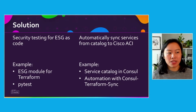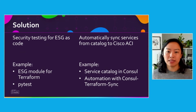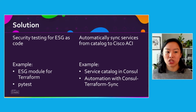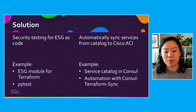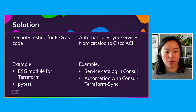The solution I'll walk through today is how you do security testing for an endpoint security group as code, as well as how you automatically sync those services from a catalog to Cisco ACI. Effectively, the end-to-end solution should be a secure infrastructure as code that automates a lot of this workflow for you, so you don't have to worry about its security or functionality. I'm going to be using an endpoint module for Terraform, tests written in PyTest, and Consul Terraform Sync, which synchronizes the service catalog in HashiCorp Consul using a Terraform module.